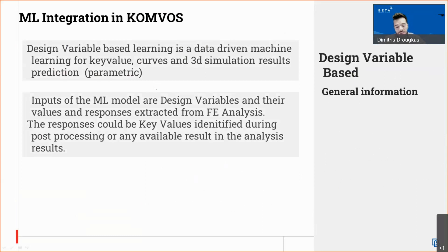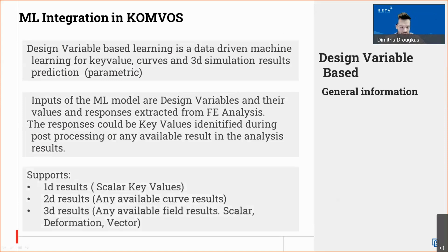The input for this machine learning model is design variables and their values, along with the responses extracted from analysis. This can be single values like key values, or 2D or 3D results. As we train with these types of results, these are what we can predict: single scalar values, 2D plots in charts, and full 3D results on the updated 3D model.